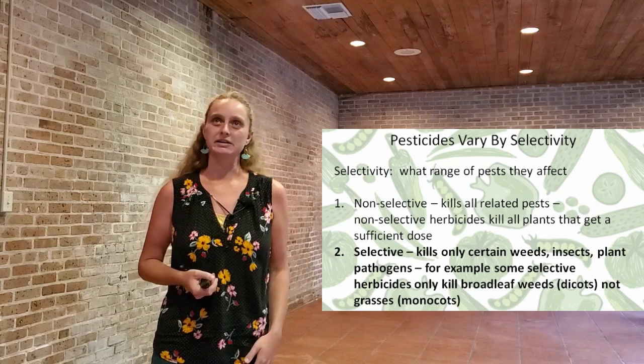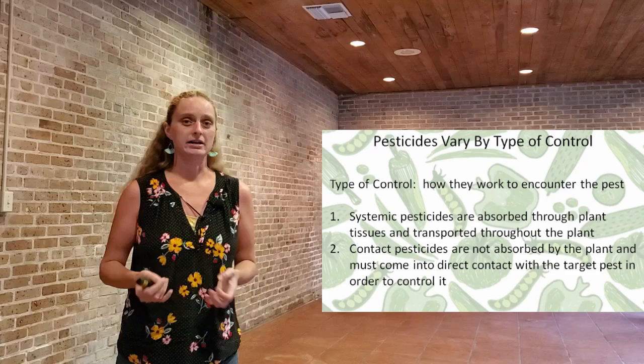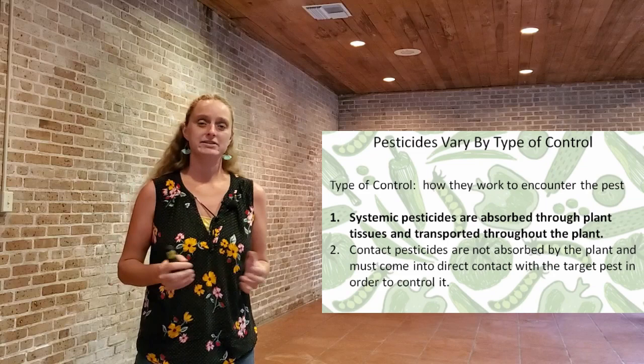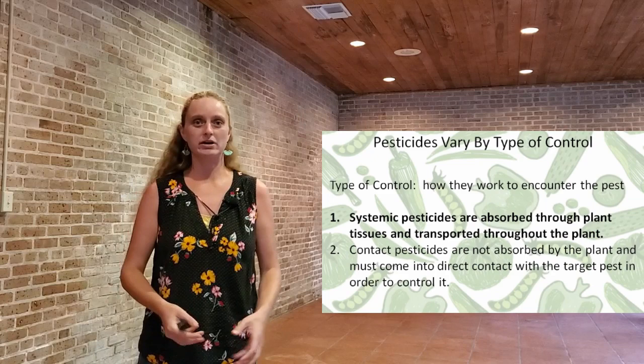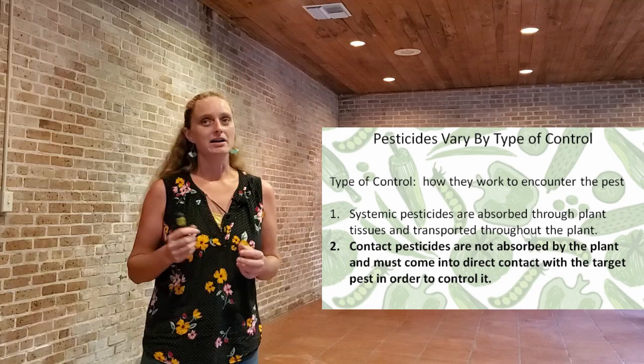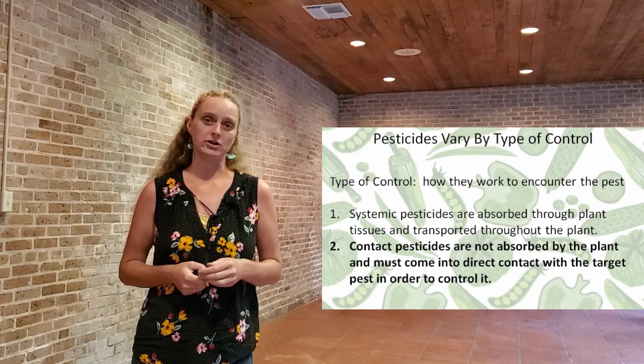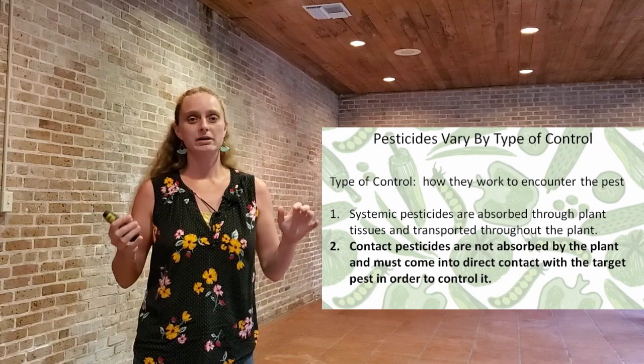Pesticides also vary by type of control — that's how they work and interact with pests. Systemic pesticides are absorbed through plant tissues and transported throughout the entire plant. You spray them or drench the soil, they're taken up by the roots, and the product is able to move throughout the entire plant. Contact pesticides are not absorbed by the plant and have to have direct contact with what you're trying to control — you would typically have to spray it on the pest or spray it in a way that the pest will pick it up later.